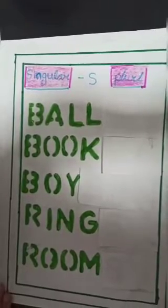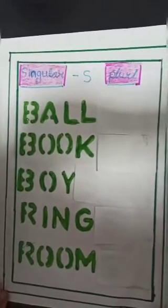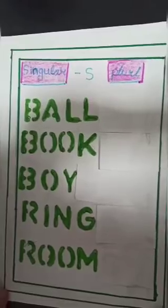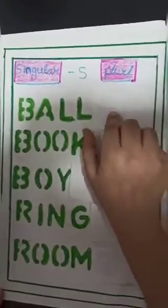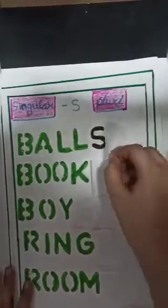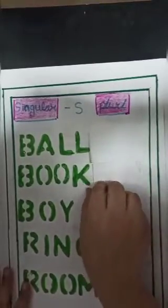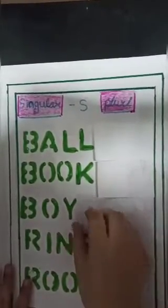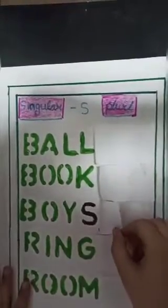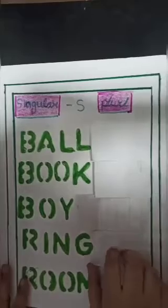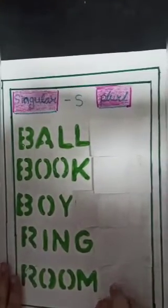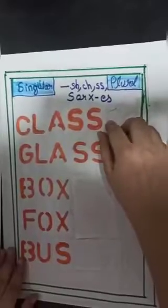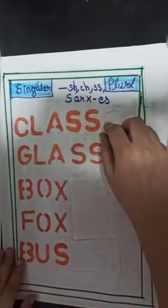Rule number 1: Adding S to the singular noun. Plural, singular. Ball, balls. Book, books. Boy, boys. Ring, rings. Room, rooms.